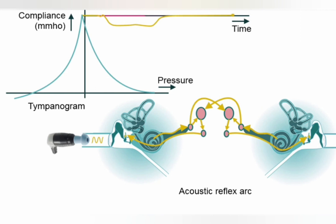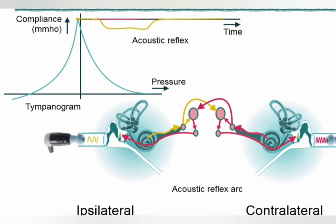At the level of the superior olivary complex, the signal can also cross to the opposite superior olivary complex and stimulate the other side's facial nerve, resulting in contraction of the other side's stapedius muscle — giving a contralateral acoustic reflex. The side is determined by where you give the stimulus. If the stimulus is on the right, we say right ipsilateral and left contralateral. If the stimulus is from the left ear, we call it left ipsilateral if recorded on the left side, and right contralateral if recorded on the right side.